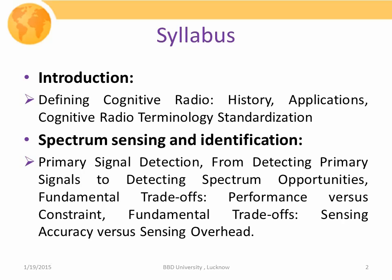Then we will move forward to discuss about spectrum sensing and identification processes, in which we will discuss about primary signal detection, from detecting primary signals to detecting spectrum opportunities, fundamental trade-offs, performance versus constraints, performance measures, and sensing accuracy versus sensing overhead.